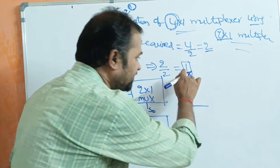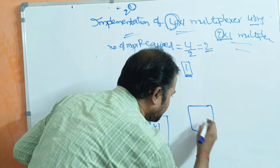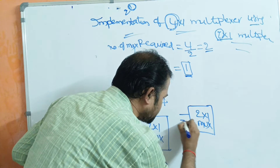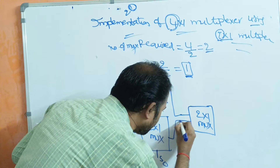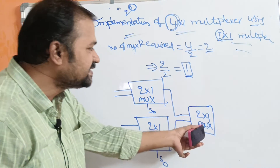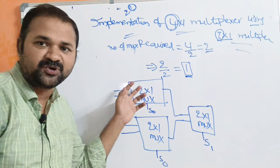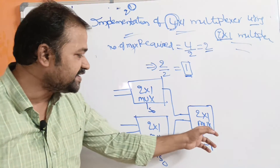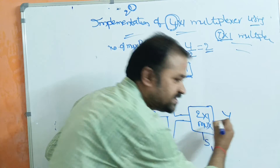At the second level, only 1 multiplexer is required. This second-level multiplexer accepts 2 inputs: one from the output of the first multiplexer and the second from the output of the second multiplexer. This multiplexer also has only 1 selection input, but since it is at the next level, let the selection input be S1. The selection input at the first level is S0, whereas at the second level it is S1, and the final output is denoted by Y.